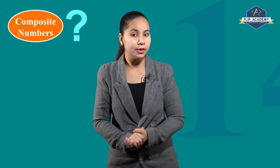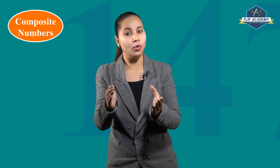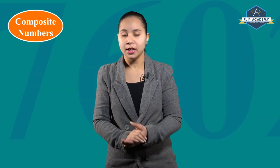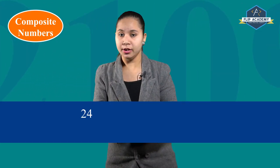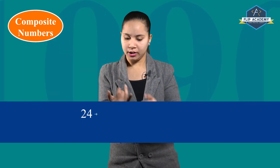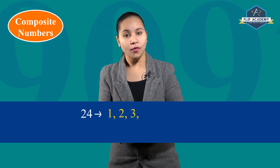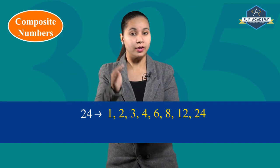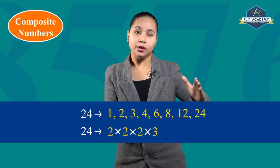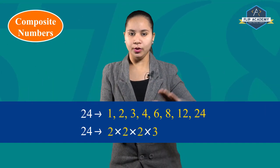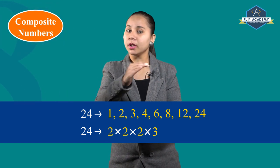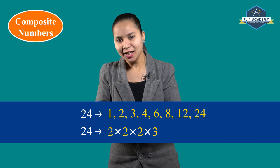Come back to composite numbers. What are composite numbers? Composite numbers are those numbers that have more than two factors and can be represented in the form of a product of prime numbers. For example, 24 has more than two factors — it is divisible by 1, 2, 3, 4, 6, 8, 12, and 24 itself. And 24 can be written as 2×2×2×3, meaning it can be written as a product of prime numbers. That is why 24 is a composite number.